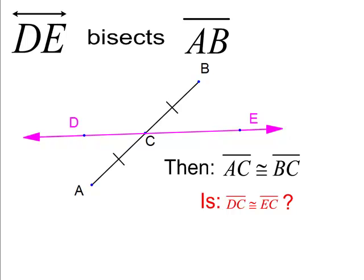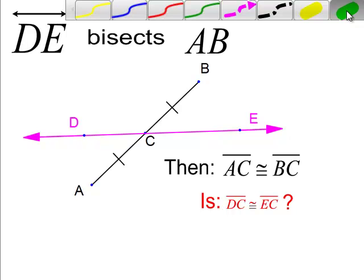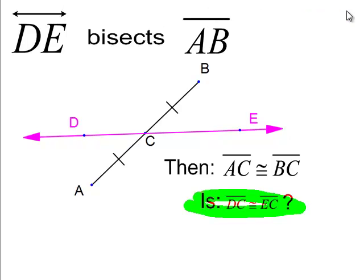DE, that magenta line on the screen, bisects AB. So that line, DE, is cutting the line segment AB into two congruent lengths, which is what I wrote. AC is congruent to BC. And then the big question is, is DC congruent to this part here, is this congruent to this? Nope. Could be, but you don't know that.